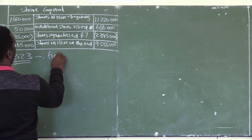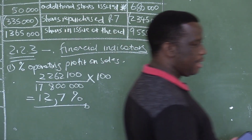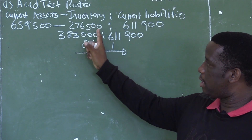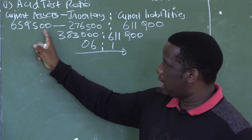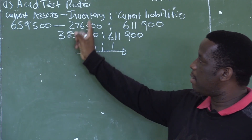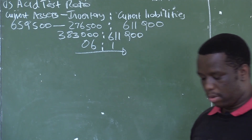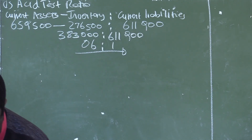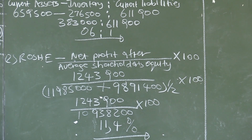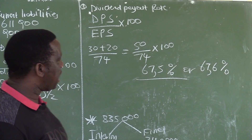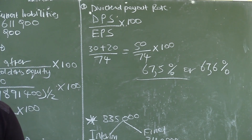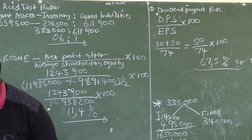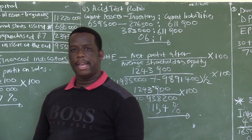These are financial indicators. Our operating profit on sales is 12.7%, that is 0.6 to 1. This business has to make sure that the stock is sold, because the total of 659,500 means the amount contributing a lot to this total is the stock — should the stock not be sold, the business will be in trouble in terms of paying their current liabilities. Our percentage return on average shareholders' equity is 11.4%. The dividend payout rate for the current year is 67.6%. This brings us to the end of question two, which was based on financial indicators and cash flow statement.